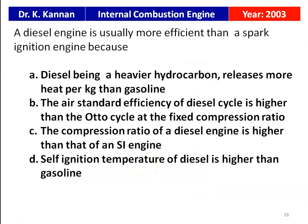The next question is from the 2003 question paper. A diesel engine is usually more efficient than a spark ignition engine because the compression ratio of the diesel engine is higher than that of the SI engine. Normally, for a diesel engine the compression ratio is between 10 to 22, whereas for the petrol engine it is 6 to 12.